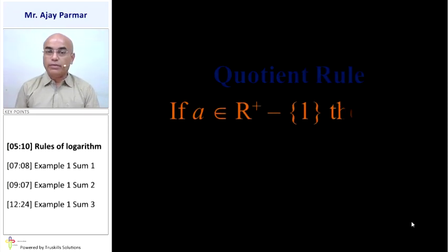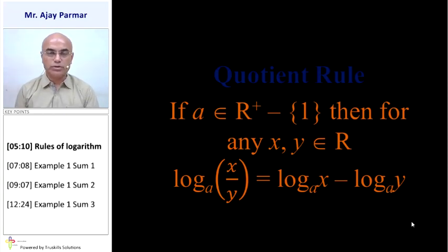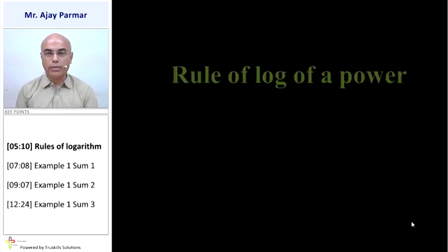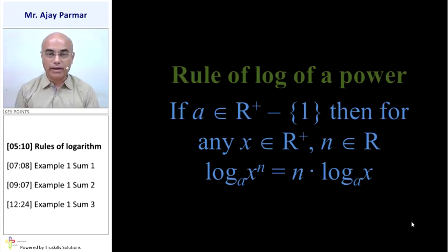Quotient rule: For the same condition of a and x, y belonging to R, log x upon y to the base a — where there is division between x and y — gives log x to the base a minus log y to the base a. So if there is division between the numbers, there will be subtraction between their logs. Rule of log of a power: For the same condition of a, any real positive x, and any real number n, log of x raised to n to the base a equals n multiplied by log x to the base a.